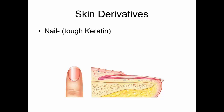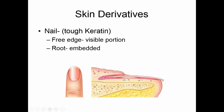Another skin derivative are the nails. Again, we have cells toughened by keratin. The free edge is the visible portion of the nail, and the root is embedded back in the dermis where the actively dividing cells are located. Nails give us protection on the ends of our fingers and toes, and we also tend to use them as little tools — scraping with them or even using them as a screwdriver.